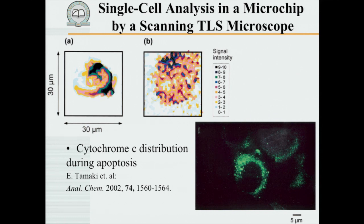Here we see a single cell cultured in a microchip. This is a classical fluorescence image based on staining of material in the cell. And here we see the thermal lens scan — a two-dimensional scan with one micrometer resolution over 30 micrometers in both directions — showing quite nicely the cytochrome distribution within the cell, corresponding very well to the fluorescence image. After cell apoptosis, the cytochrome C is everywhere in the microchip. This demonstrates the capability of thermal lens microscopy to image single cells.